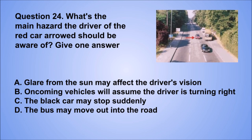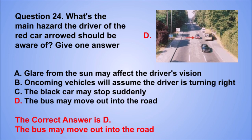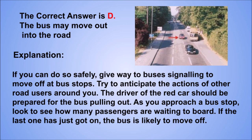Question 24. What's the main hazard the driver of the red car should be aware of? Give one answer. A. Glare from the sun may affect the driver's vision. B. Oncoming vehicles will assume the driver is turning right. C. The black car may stop suddenly. D. The bus may move out into the road. The correct answer is D, the bus may move out into the road. If you can do so safely, give way to buses signaling to move off at bus stops. Try to anticipate the actions of other road users. As you approach a bus stop, look to see how many passengers are waiting to board. If the last one has just got on, the bus is likely to move off.